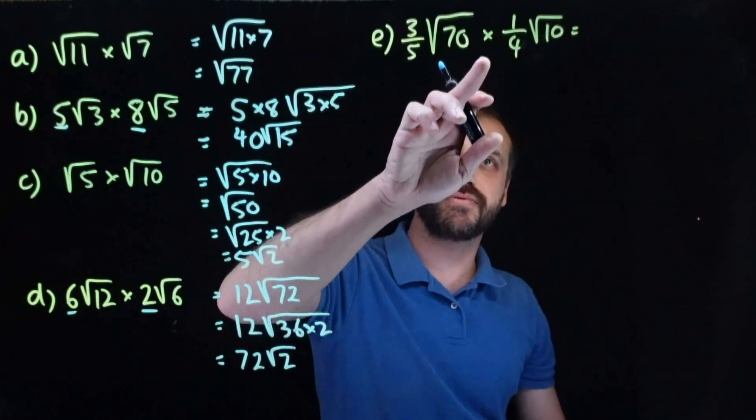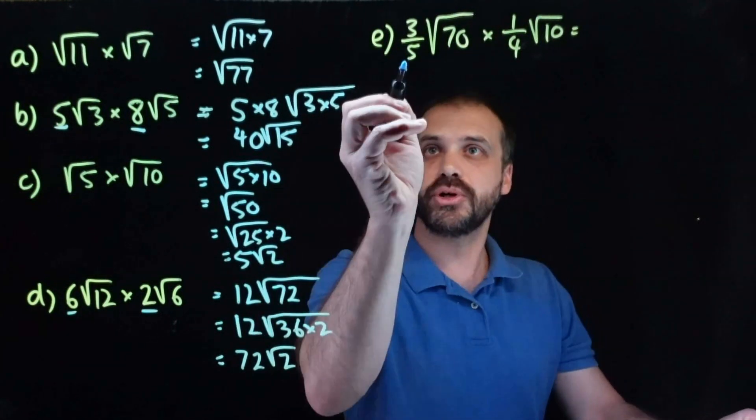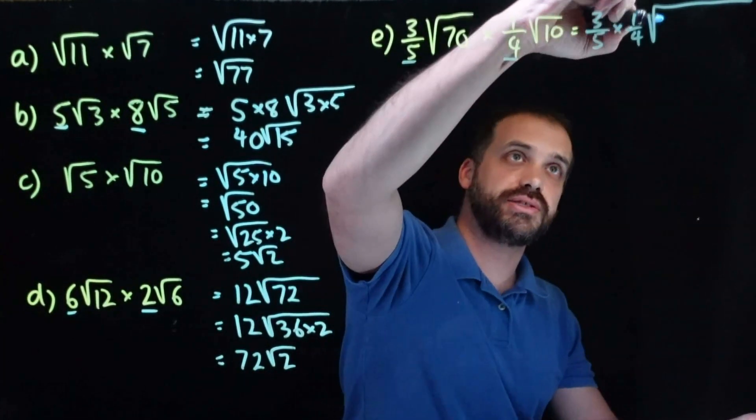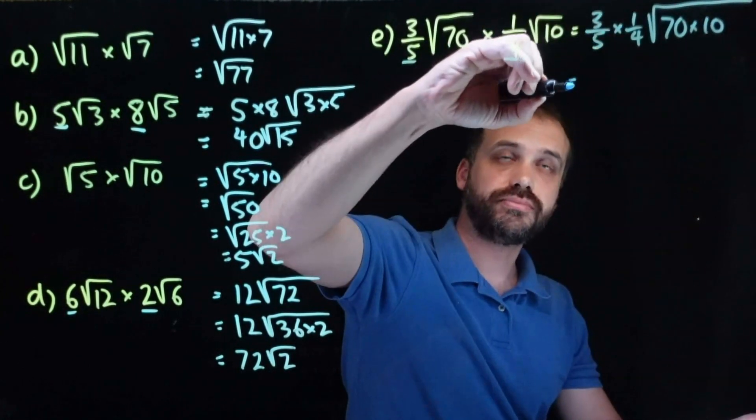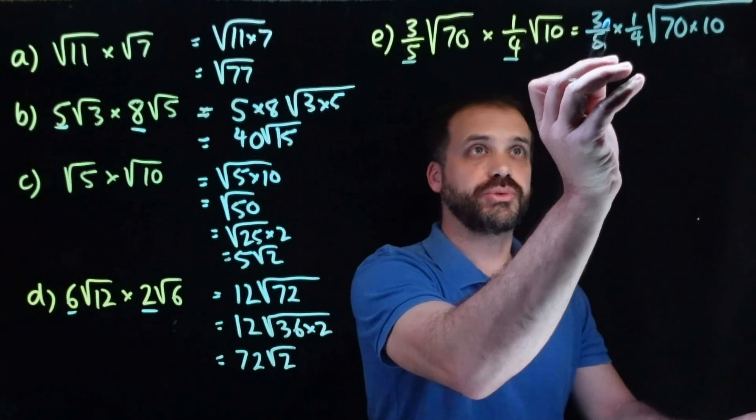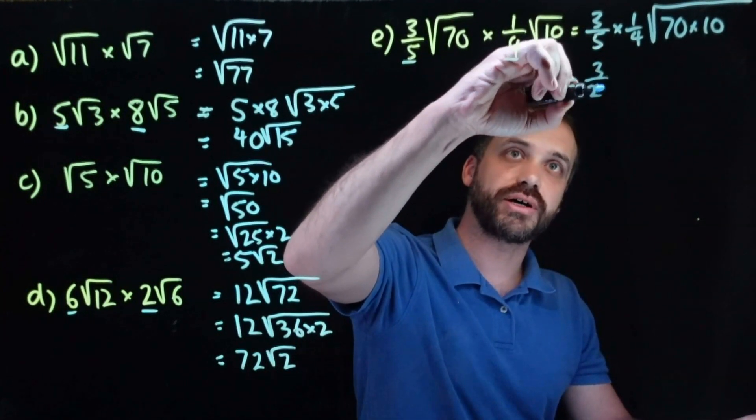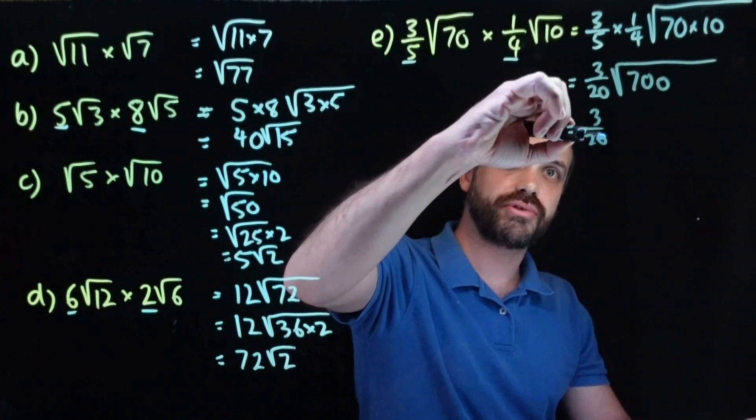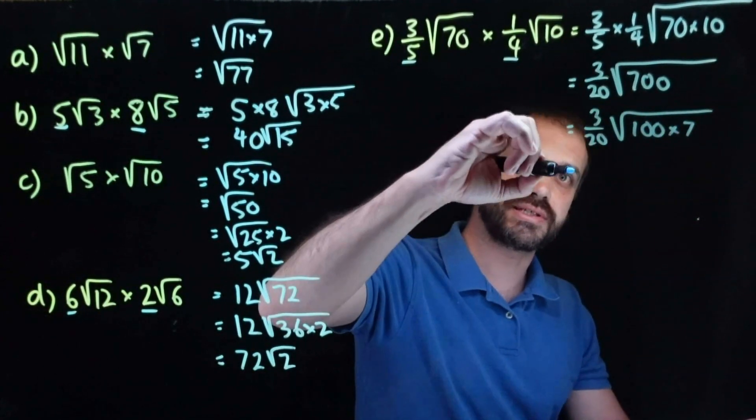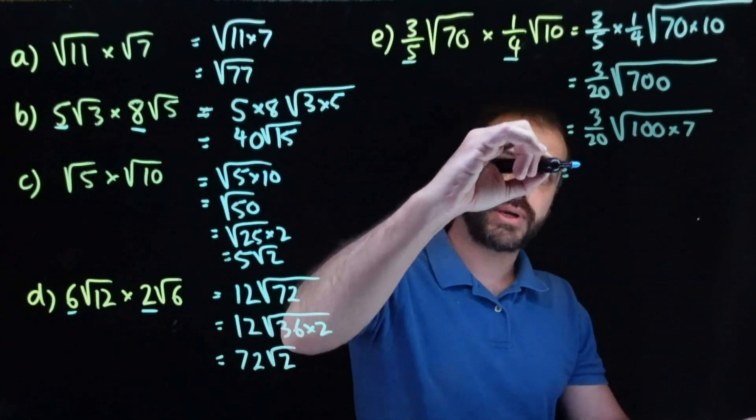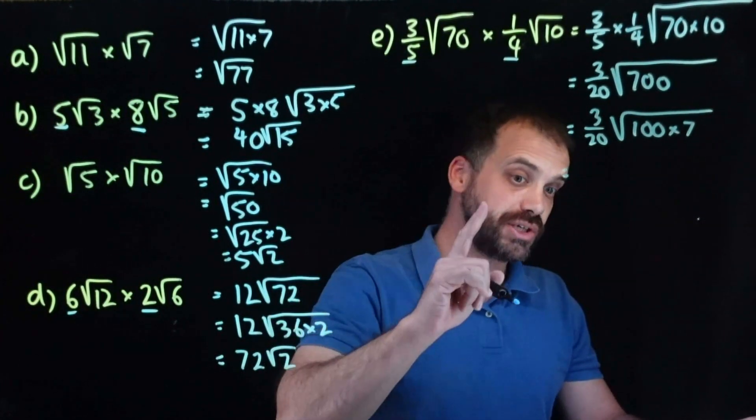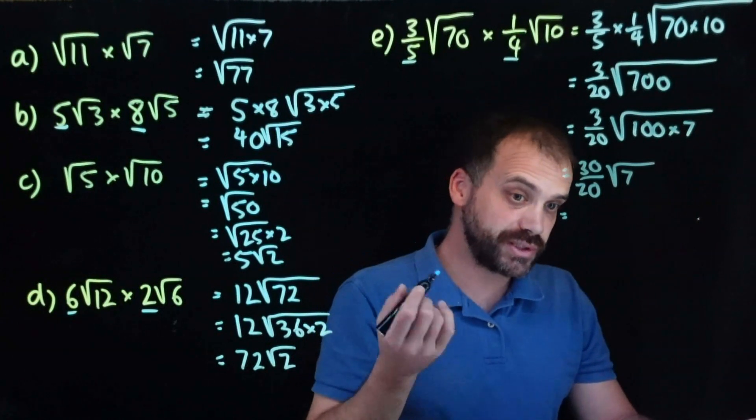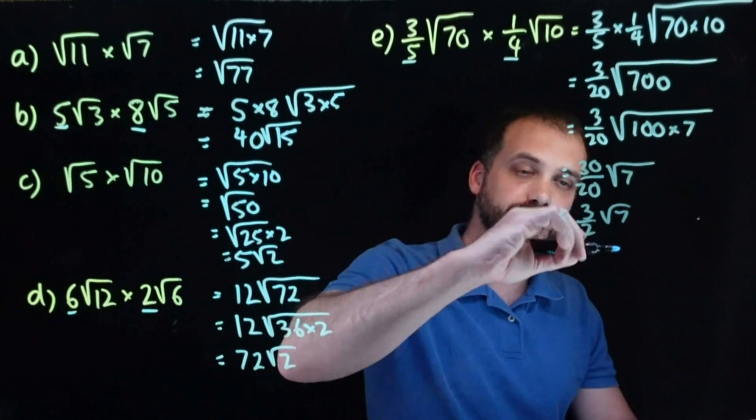Last one. We have 3 fifths root 70 times 1 quarter root 10. Multiply the things on the outside by each other and multiply the things on the inside by each other. 3 fifths times 1 quarter, multiply top by the top, bottom by the bottom, we get 3 over 20 and root 700. Can we simplify that? Yes, we can. 3 over 20, 100 times 7. The 10 comes out here. We end up with 3 over 20 times 10, which is 30 over 20, root 7. And 30 over 20 simplified is 3 over 2 root 7.